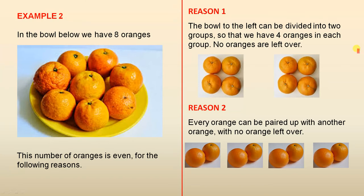Now let's see why the number eight, representing the oranges in this bowl, that number eight is even. Reason one. The bowl to the left can be divided into two groups, so that we have four oranges in each group, no oranges are left over. So there's the first reason, we have two groups, four oranges in that group and four oranges in that group. Four plus four is eight, which is the same number as we have here, nothing left over.